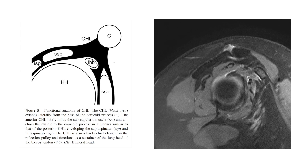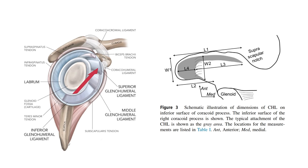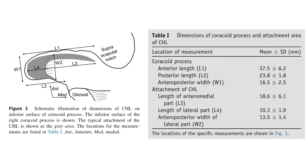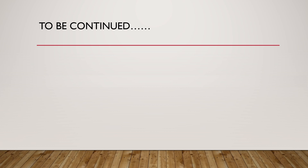These illustrations demonstrate the extension of the ligament: acromion, coracoid process, humerus, supraspinatus, subscapularis, and the coracohumeral ligament area. The right image is a schematic illustration of the inferior surface of the coracoid process, while the left image helps you understand the orientation. Unlike what most of you might imagine, the coracohumeral ligament is not attached to the lateral edge of the coracoid process. The gray mapped area shows the typical attachment of the coracohumeral ligament. It attaches to the anterior, lateral, and posterior under-surface of the coracoid process.